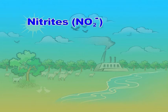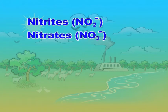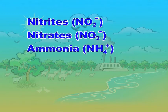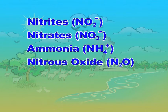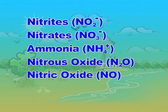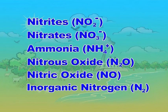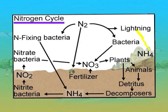This elemental form of nitrogen is used by plants only after it gets converted into inorganic nitrogen. It is converted into inorganic nitrogen-containing compounds like nitrites (NO2⁻), nitrates (NO3⁻), ammonia (NH4⁺), nitrous oxide (N2O), nitric oxide (NO), or inorganic nitrogen (N2). These conversions are done by various kinds of bacteria and other microorganisms. Thus, the nitrogen cycle is the process by which nitrogen is converted in its various chemical forms by biological and physical processes.